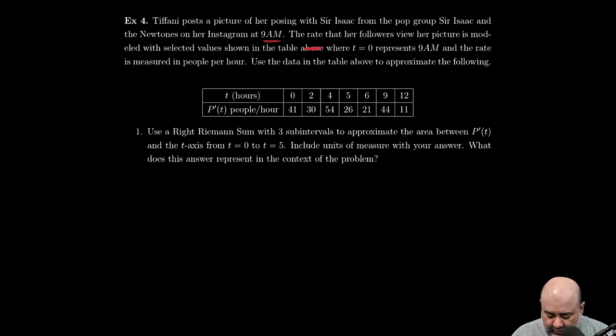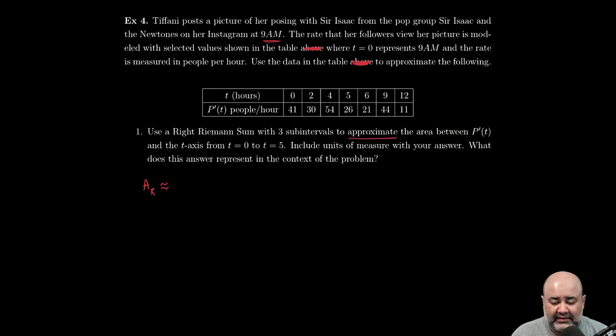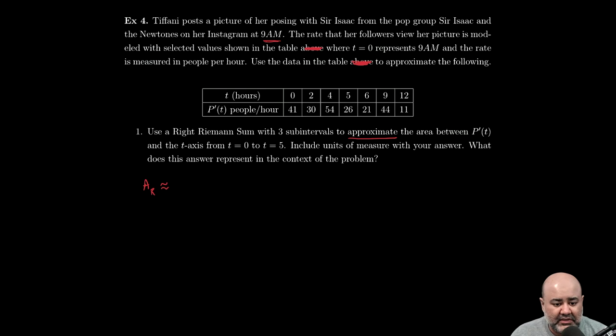The rate is measured in people per hour. Use the data in the table below to approximate the following. We want to use the right Riemann sums with three subintervals to approximate the area between P'(t) and the t-axis from t equals zero to t equals five. So I'm going to call it area. Notice that the question is telling you that you cannot use equality, it's asking you to approximate, so approximation is indicated by tildes. You're going to be required to do that. I would suggest using RRAM here.